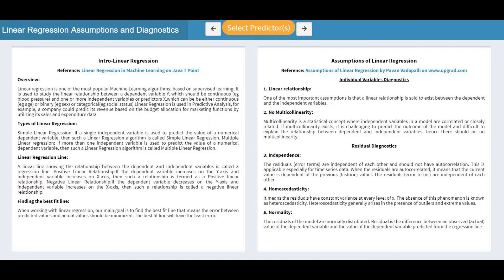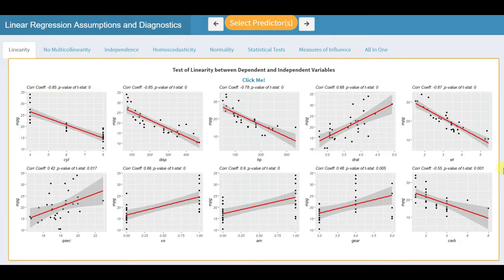Out of five assumptions, the first two are of individual variable diagnostics and the rest of the three are of residual diagnostics. Here we have plots and statistics in tabs to test assumptions.